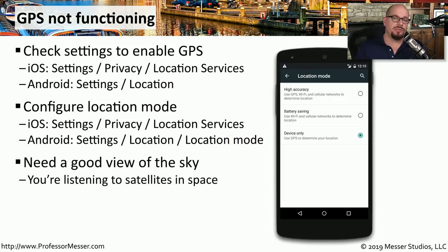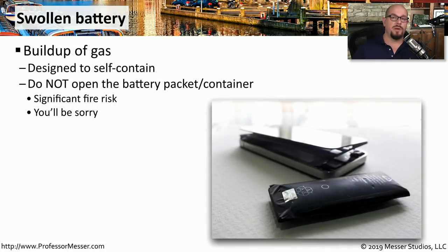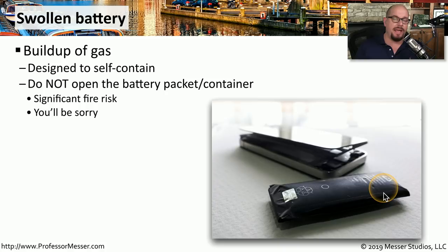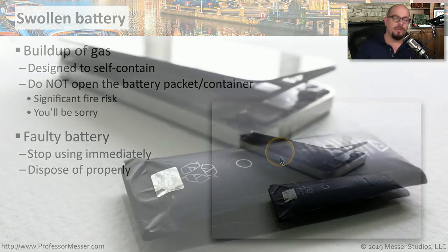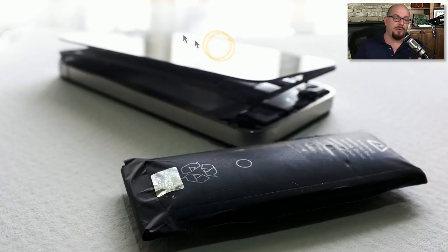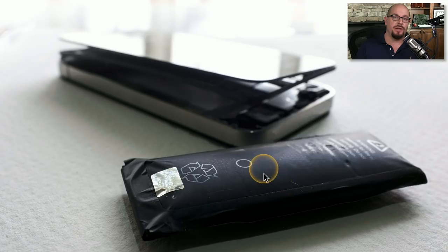Because GPS signals come from satellites, you need a good view of the sky for an accurate position. If you've managed mobile devices, you've probably seen a battery that has blown up and looks like a pillow. This is a battery that has failed with a buildup of gas inside the battery case — it is designed to self-contain that gas. Be very careful not to puncture or damage that container, as the battery may expand within the device causing damage. Stop using the device immediately and dispose of the battery very carefully. This expansion prevents the device from catching on fire, making it a very important safety feature.